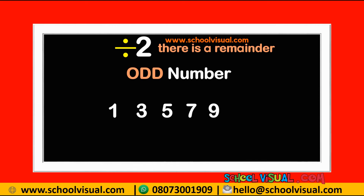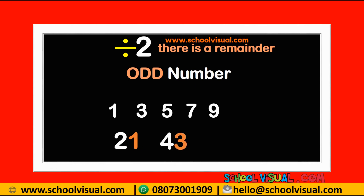If you check this number, you can see that the last digit is what we said — so this is an odd number. If you divide it by two, you will see that there will be a remainder. Look at this one — the last digit is what we said. Look at this one — the last digit is what we said.